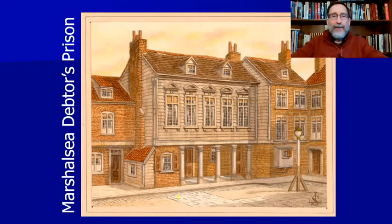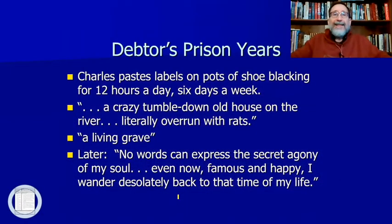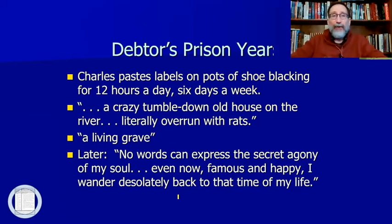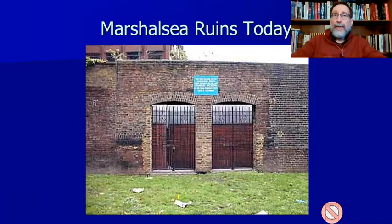This is an artist's sketch of what the outside of the Marshalsea prison looked like — it doesn't look very prison-like; it was a debtors' prison, not a high-security facility. Charles described this place as 'a living grave,' saying, 'No words can express the secret agony of my soul. Even now, famous and happy, I wander desolately back to that time in my life.' Today we would call this childhood trauma. The Marshalsea is gone today — it was torn down as a horrible reminder of the inequities poor people faced in those days.